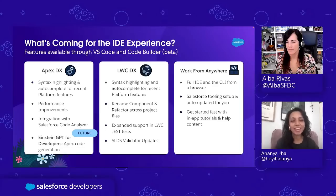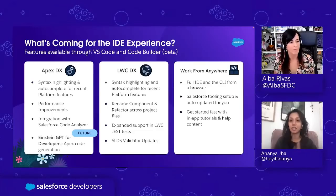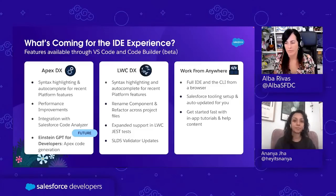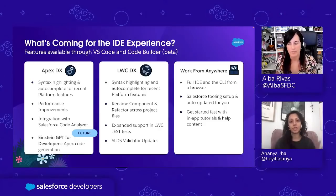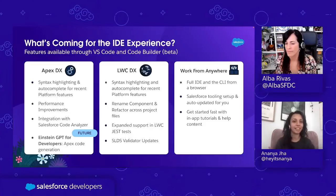You might have heard of our Salesforce CLI Scanner, now known as Salesforce Code Analyzer. That's previously been available to you in the CLI. Well, now we're going to be helping you shift left in detecting code quality and security vulnerabilities by integrating Code Analyzer directly into your IDE. Later this year, as soon as you finish writing your code and hit save, Code Analyzer will run a scan, find all the errors that PMD would catch, and even catch security vulnerabilities right there in the IDE.